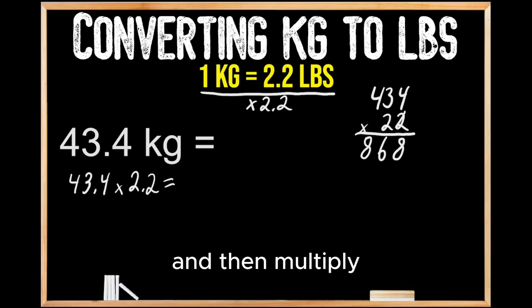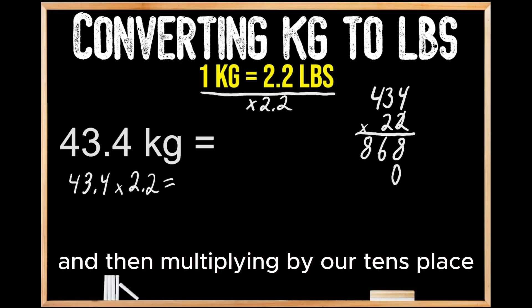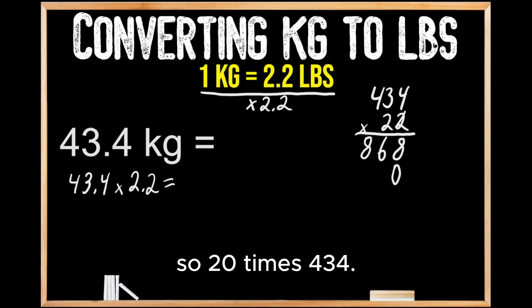Now we're going to put a line through the ones place and then we're going to multiply by our tens place by dropping a zero to the line down below and then multiplying by our tens place. So 20 times 434. 2 times 4 gives us 8. 2 times 3 gives us 6. And lastly, 2 times 4 gives us 8 for 8680.